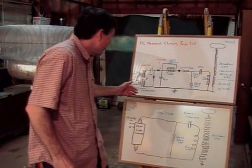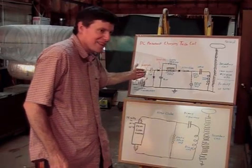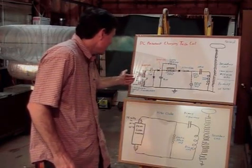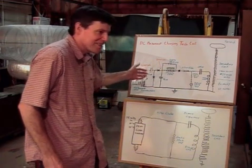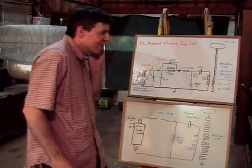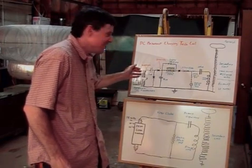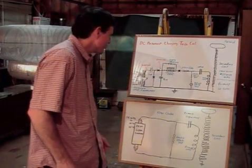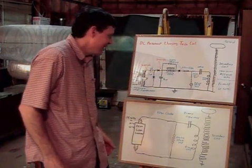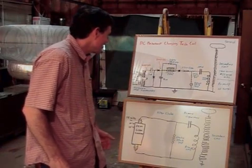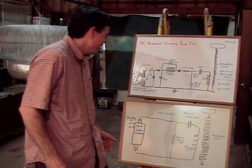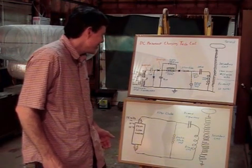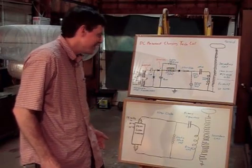One problem with having capacitors in the Tesla coil circuit of course though is when you power this thing down, them capacitors still hold a charge. So that's a safety issue you've got to worry about. You've got to make sure those capacitors are discharged before you work on it. Both coils work about the same performance wise. It largely depends on what you can get to make it out of as far as what way you go.